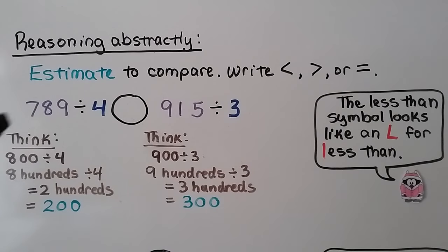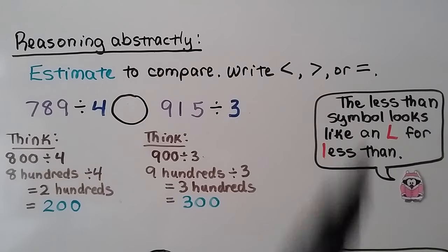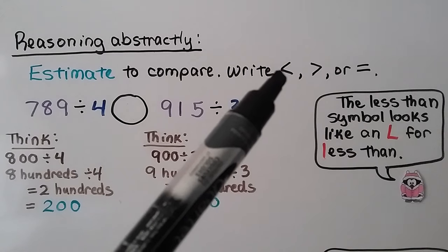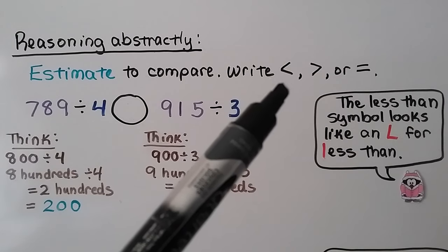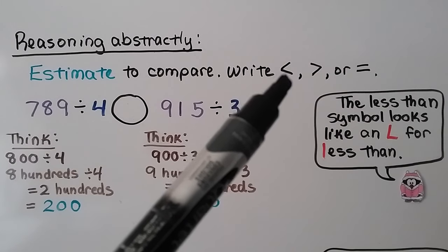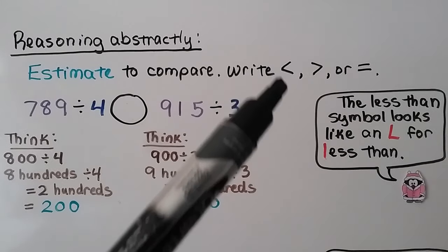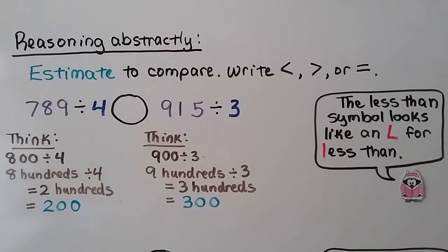We need to estimate to compare and write less than, greater than, or equal to. Notice this symbol — this is the less than symbol. You can remember which symbol this is because it kind of looks like an L that's been slanted, for 'less than.'